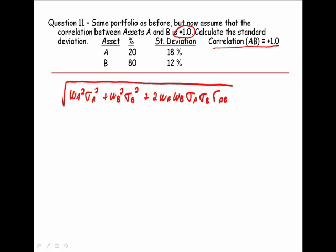Our weights are the same, so 0.2 squared times the standard deviation squared, plus 0.8 squared times the standard deviation squared, plus 2 times 0.2, 0.8, 18, 12, times the correlation, and the correlation we're changing to be positive 1.0.